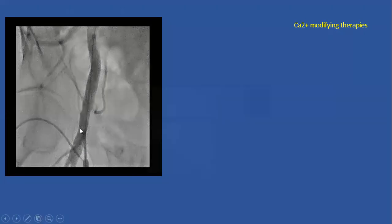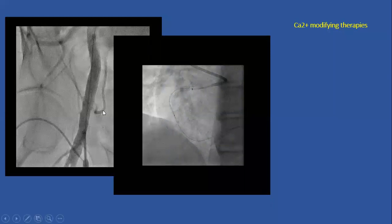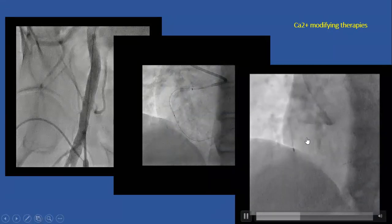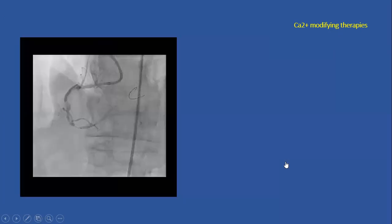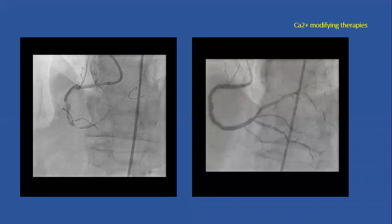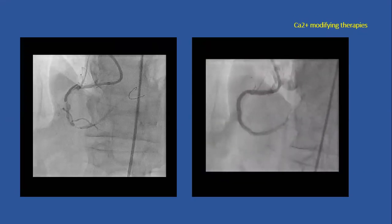We changed the approach — went femoral for better support, used a different guide and extension catheter. Now the balloon was already across the lesion but unable to dilate it. Therefore we proceeded with rotational atherectomy — the burr in a pecking-like motion, engaging the calcium and eventually crossing the calcified lesion. The rapidly spinning burr in a coronary artery is not the safest approach, and the consequence was a heavily dissected RCA throughout. However, we were able to salvage the vessel with good stenting results, with no problem delivering stents to secure the vessel.